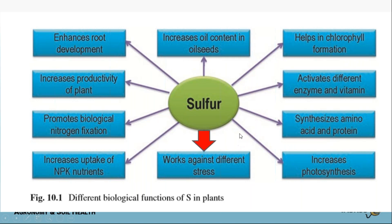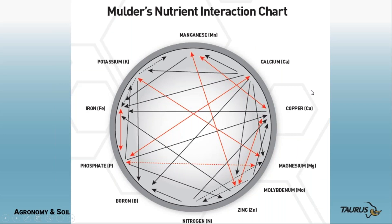Most of you are now using sulfur in a much bigger way — sulfur is key for a lot of things. It enhances root development, increases productivity, promotes biological nitrogen fixation, increases uptake of NPK, works against different stresses, increases photosynthesis, and synthesizes amino acids — we need sulfur for two amino acids. It activates different enzymes and vitamins and helps in chlorophyll formation. You'll notice in the Mulder chart there's no sulfur indicated, because sulfur doesn't seem to interfere with or interact badly with anything.